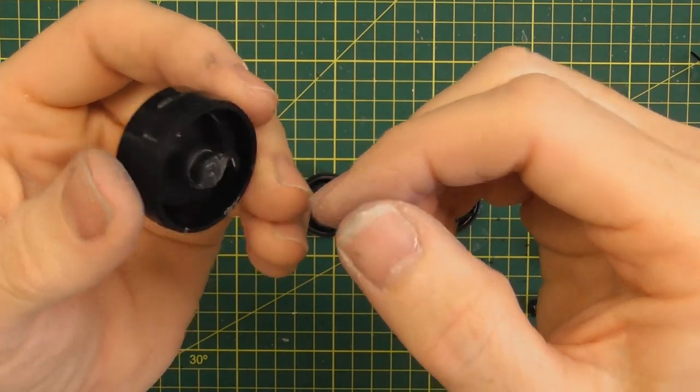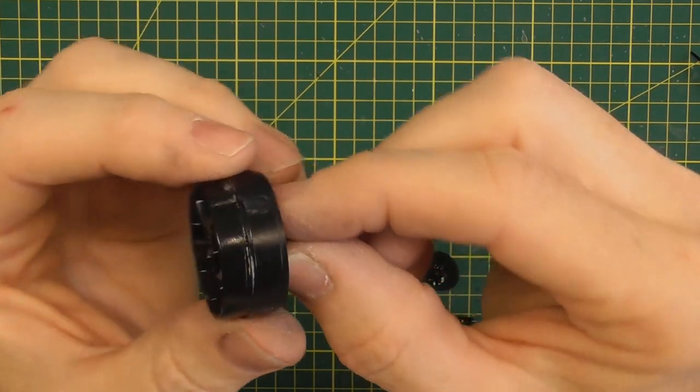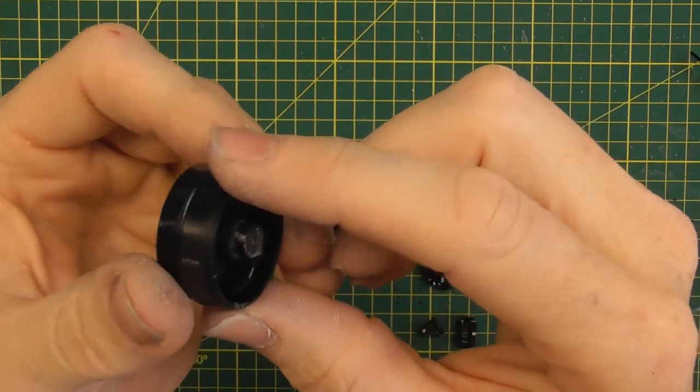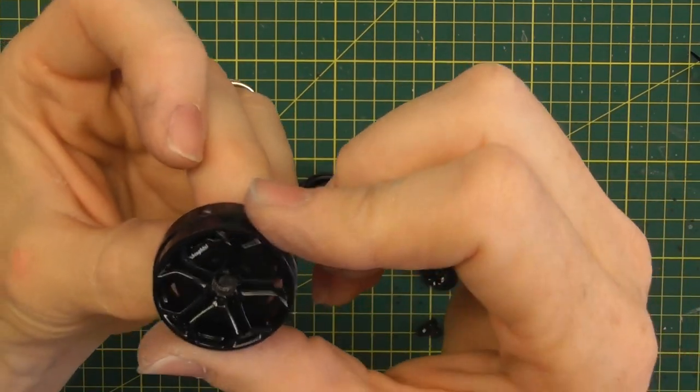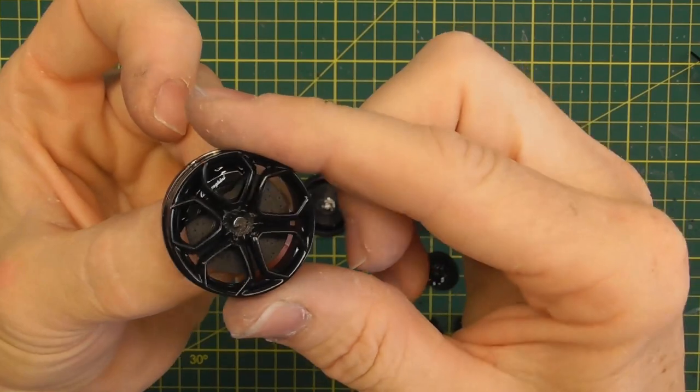Now if you try and get a set of pliers and grab it on the back you will just break the plastic parts. These wheels are attached very well onto the disc brakes.